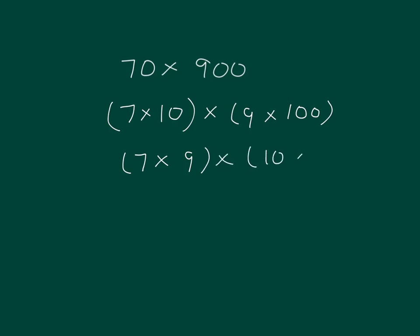So that leaves us with 10 times 100 still, and then we can solve that. 10 times 100 is 1,000. 7 times 9 is 63, so this equals 63,000. Read our whole number sentence together. 70 times 900 equals 63,000.